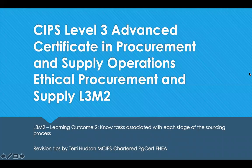Hello and welcome to revision tips for CIPS Level 3 Advanced Certificate in Procurement and Supply Operations, Module 2, which is Ethical Procurement and Supply. This is going to cover Learning Outcome 2, which is to know the tasks associated with each stage of the sourcing process. We'll cover things like how procurement needs are established, criteria to apply in creating specifications, the approaches you can take to sourcing, and the formation of agreements with suppliers.